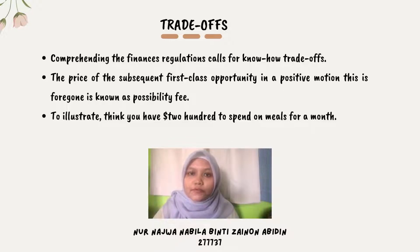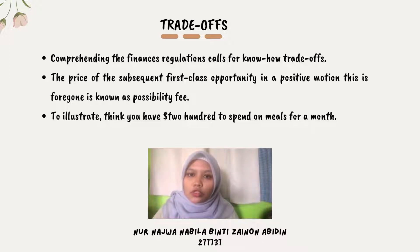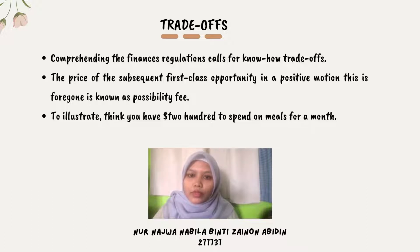This is known as opportunity cost. For example, if you have $200 to spend in one month, you can choose whether to buy basic groceries or a top-class steak meal approximately once a week. As a result, comfort and great meals could be a compromise — a good way to have sufficient meals within the whole month.